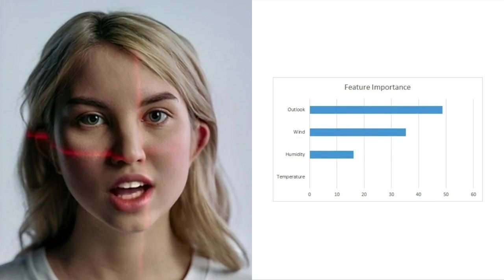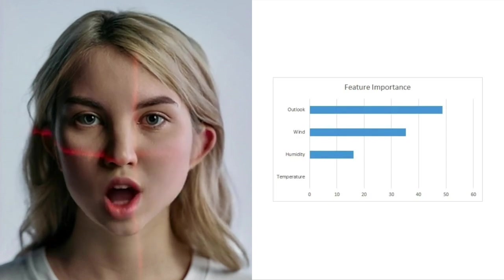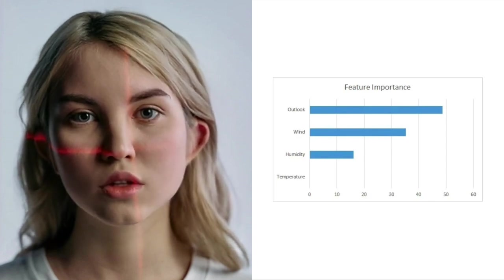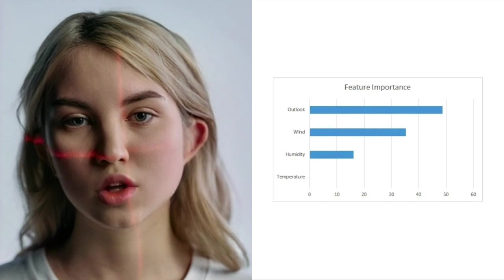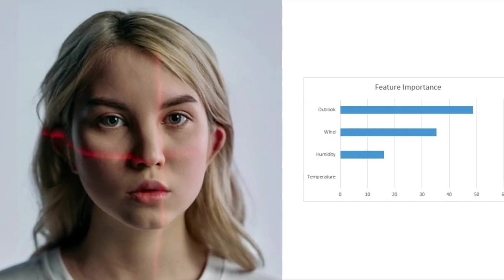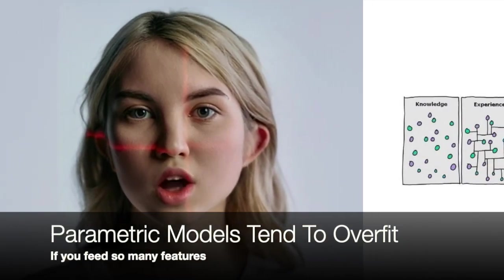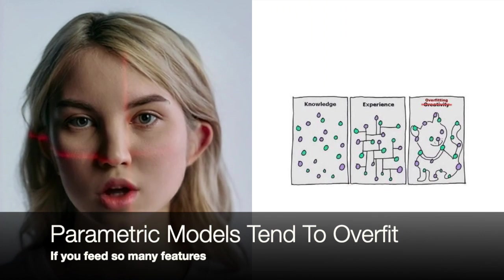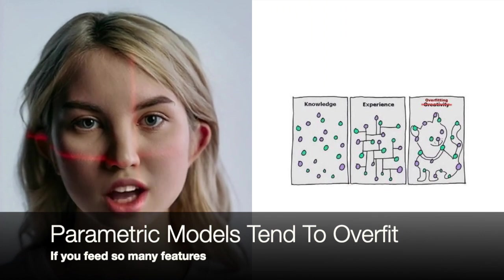Thanks to their non-parametric nature, these models can handle complex relationships and interactions in the data. By feeding all available data into these algorithms, they can autonomously determine which features are significant and which ones are not, effectively ignoring irrelevant features. On the other hand, you may poison parametric models if you feed all data to them and it will cause overfitting. Feature engineering should be done before training in parametric models.